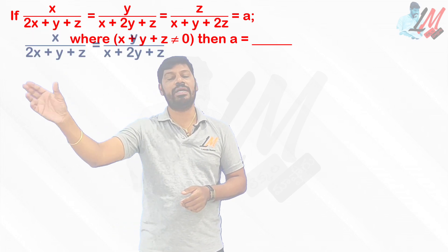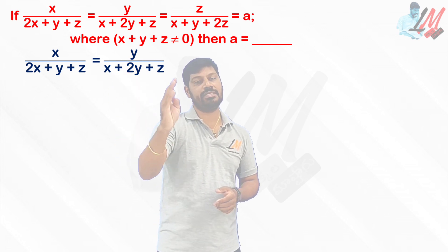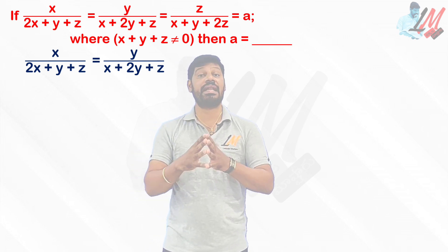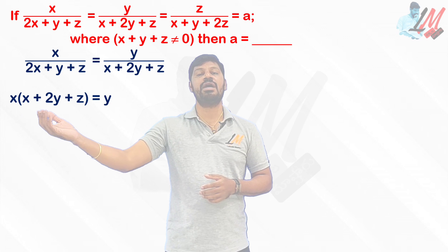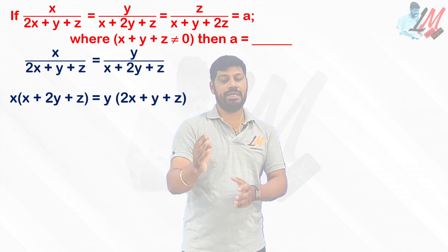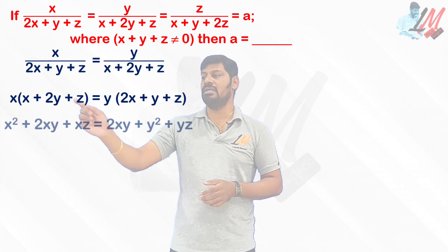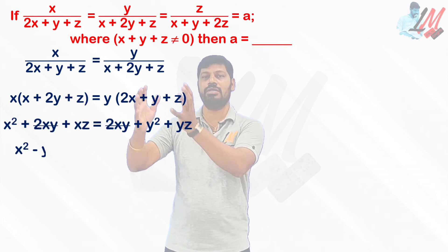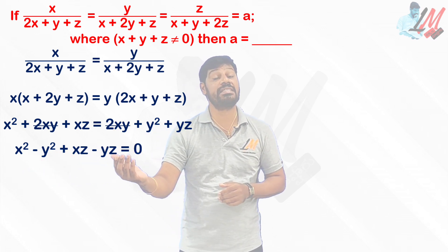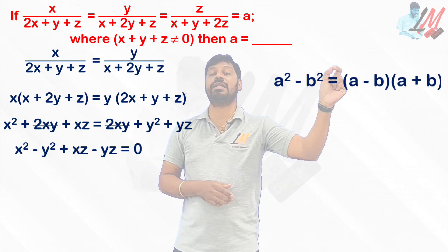First, I am taking the first two quantities: x/(2x+y+z) = y/(x+2y+z). We go for cross multiplication, which gives x(x + 2y + z) = y(2x + y + z). Removing the brackets, we get two expressions in which 2xy is a common term. Cancelling 2xy and transposing all terms to one side gives: x² − y² + xz − yz.